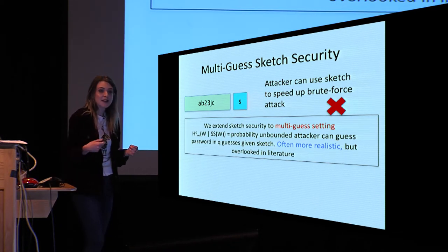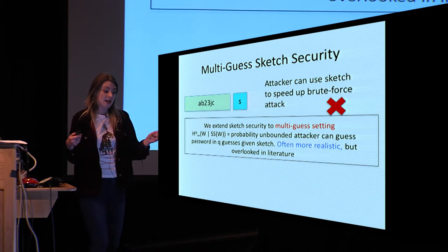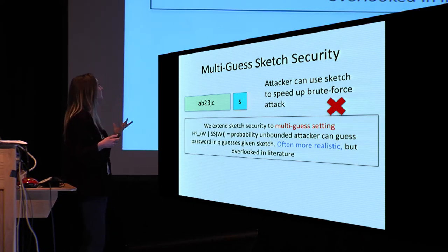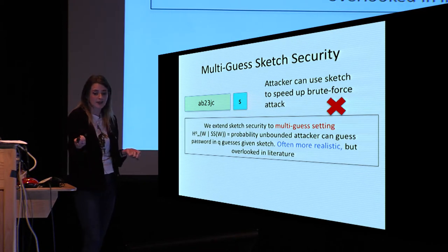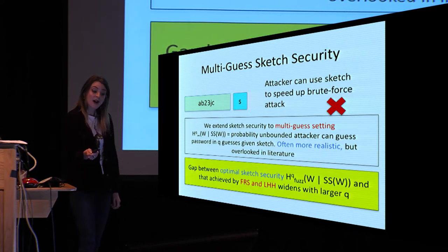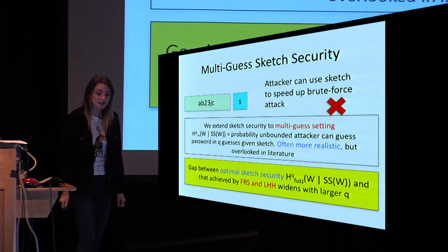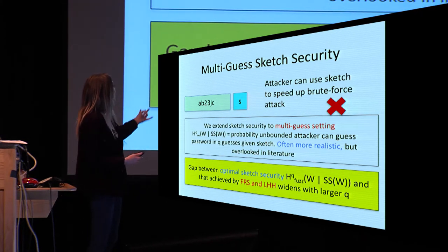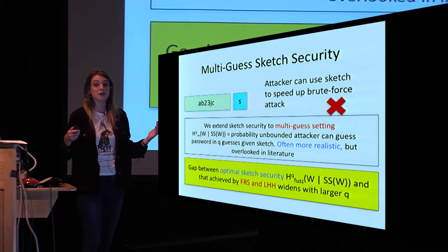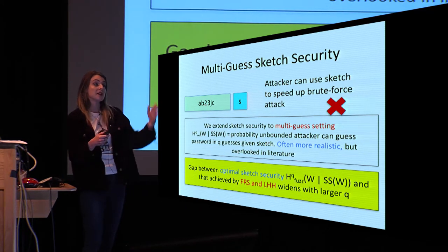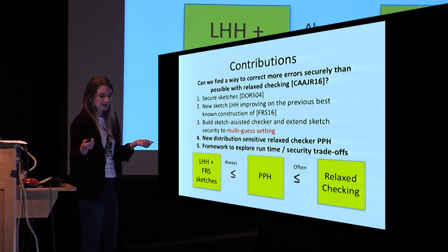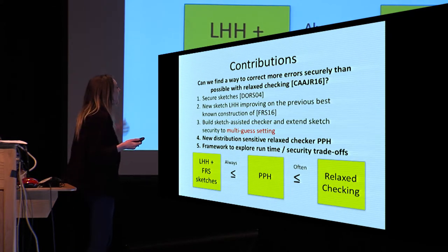To analyze sketch-assisted checking, we extend sketch security to the multi-guess setting, defining the q-conditional min-entropy, which captures how well an attacker can recover the password given the sketch with q guesses—a more realistic scenario that has been overlooked in the literature. We find, hinting at the negative result to come, that when we take the FRS and layer-hiding hash sketches—which are close to optimal in the single-guess case—and analyze them with respect to multiple guesses, the gap between theoretical optimal security and what they achieve widens.